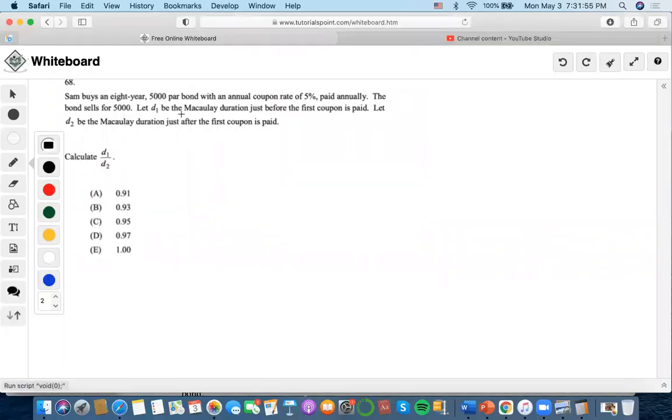Hi. So now for this one, it says Sam buys an 8-year $5,000 par bond with a Macaulay duration. So Macaulay duration is involved and the word par is involved. So what does that mean? Well, to make our life simpler, we know that the Macaulay duration of a par value bond will always use the annuity due equation.